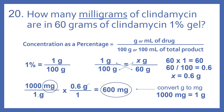We can set up equivalent fractions and then cross multiply and divide to get our answer. So if we have 1 gram per 100 grams — that's our 1% — we set that equal to X grams over 60 grams. When we cross multiply, we do 60 times 1, which is 60. Then 60 divided by 100 gives us 0.6. So X is 0.6 grams.